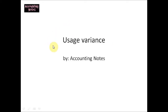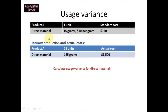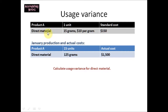This video contains an exercise on usage variance. We have a company that produces product A. The standard cost to produce one unit of direct material is $150. In order to produce one unit, the company uses 15 grams at $10 per gram. So 15 times 10 is $150 standard cost for direct material.